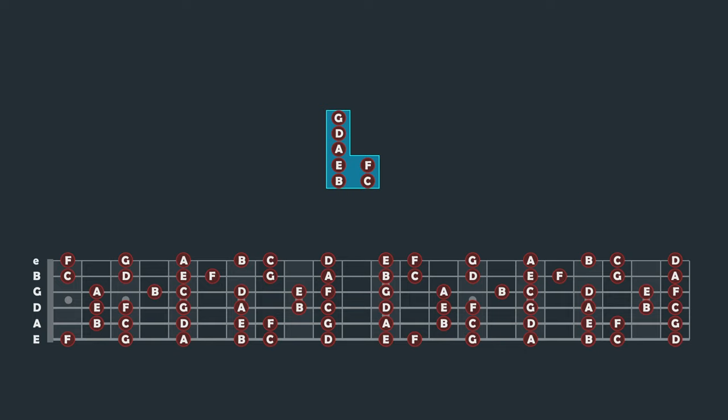For A, D and G, I use a simple mnemonic, always do good, A, D, G. Again, make up your own if you like, but remember these notes in this shape.